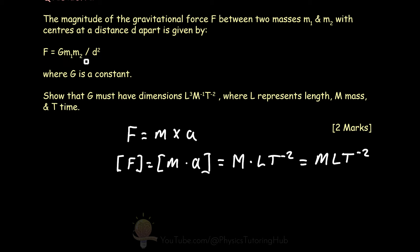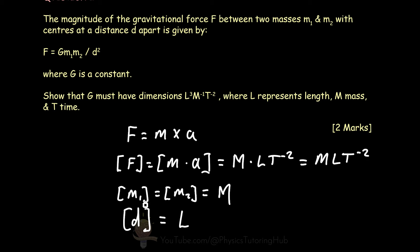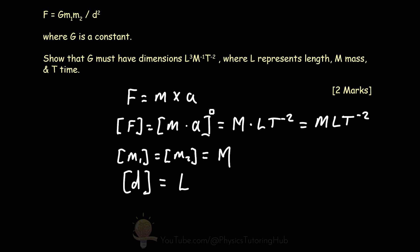For m1 and m2, they simply have dimensions of mass, and our distance d is a length. To get our first mark we must display the dimensions of force, mass, and distance. To get our second mark, we must prove that G has dimensions of length cubed, mass to the minus one, time to the minus two. We can do that by rearranging our original equation to make G the subject of the formula.